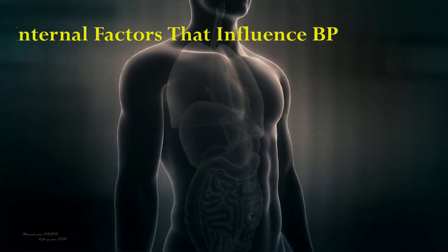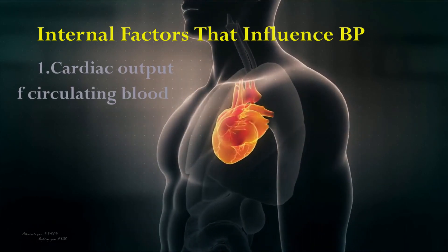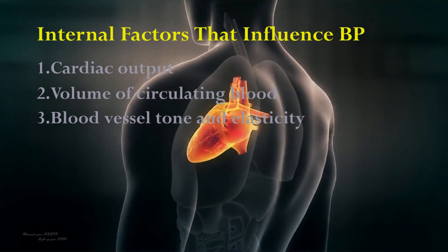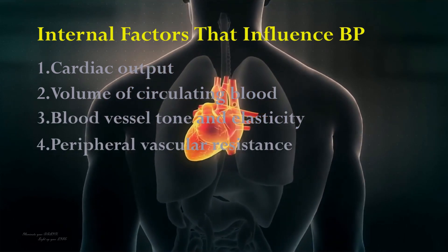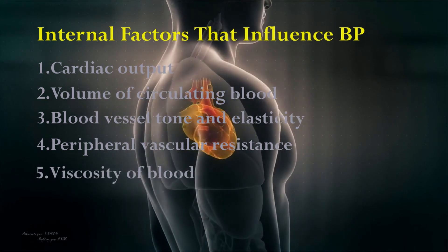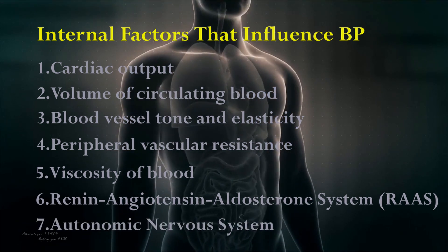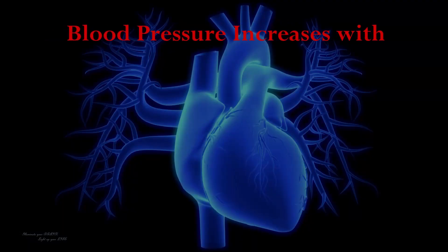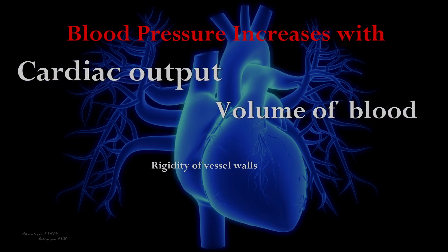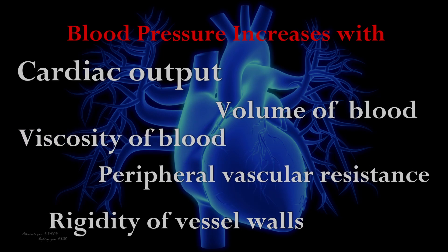Internal factors that influence blood pressure include cardiac output, volume of circulating blood, blood vessel tone and elasticity, peripheral vascular resistance, viscosity of blood, the renin-angiotensin-aldosterone system, and the autonomic nervous system. Blood pressure increases with increased cardiac output, volume of blood, rigidity of vessel walls, peripheral vascular resistance, and viscosity of blood, and vice versa.